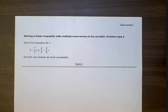Solving a linear inequality with multiple occurrences of the variable, problem type 3. Solve the inequality for v: 2 minus 7 halves v is greater than or equal to 9 halves subtract 5 eighths v. Simplify your answer as much as possible.